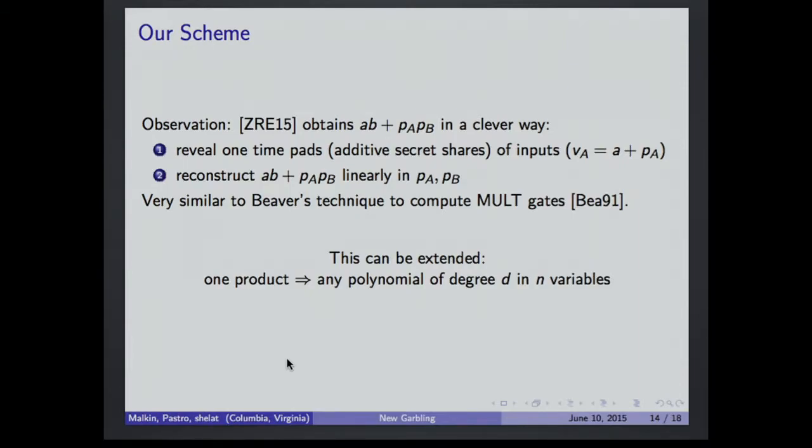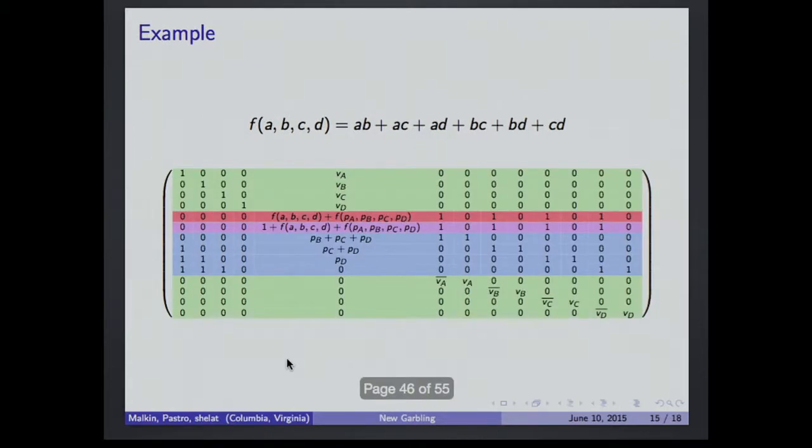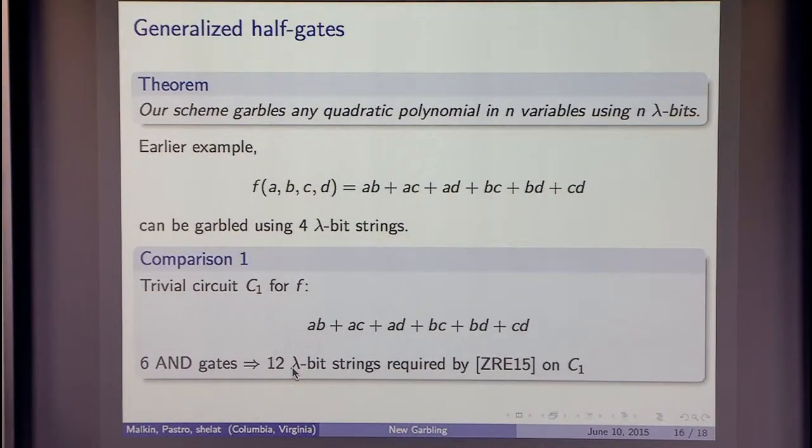You use this general technique. I can show you now a matrix for garbling this polynomial. So this is how our scheme will garble A AND B plus XOR A AND C, XOR A AND D, blah, blah, blah. So I'm not going to do the math, but you can trust me. The two properties hold. And what is interesting about this is that we have four blue rows. So four rows. In general, for a quadratic polynomial, we have that essentially the number of rows we use to garble is the number of variables. In the early example, I showed four rows for this. And if you compare to a trivial circuit that computes the same function, and you apply the half-gates paper, you get 12 rows. So essentially, if you were given the circuit A AND B, XOR, blah, blah, blah, you would circumvent the lower bound.